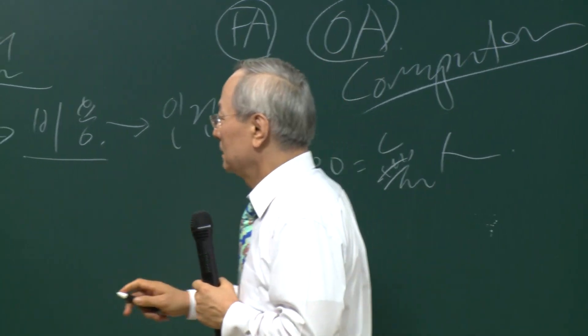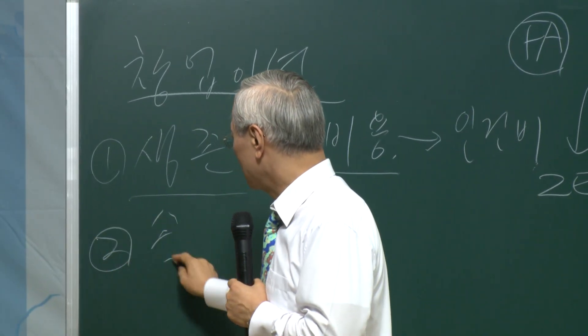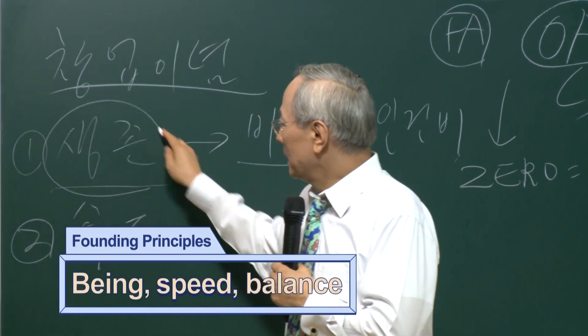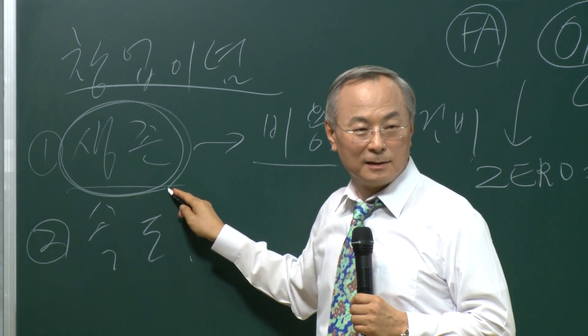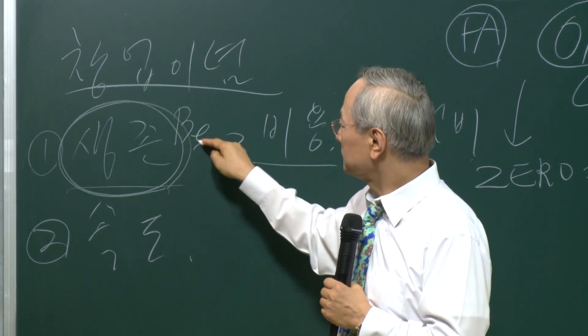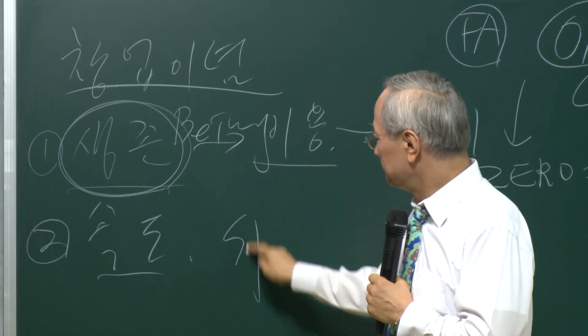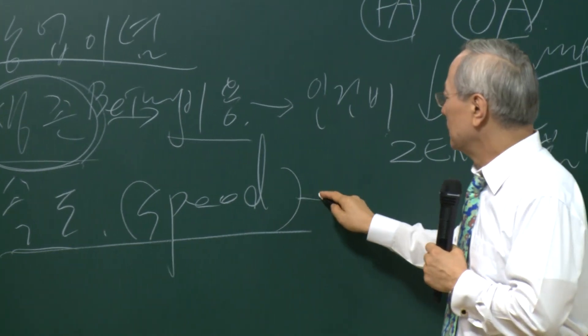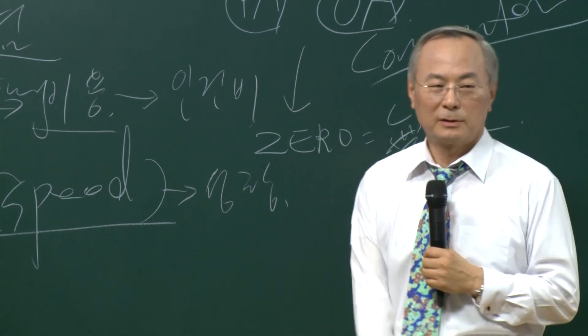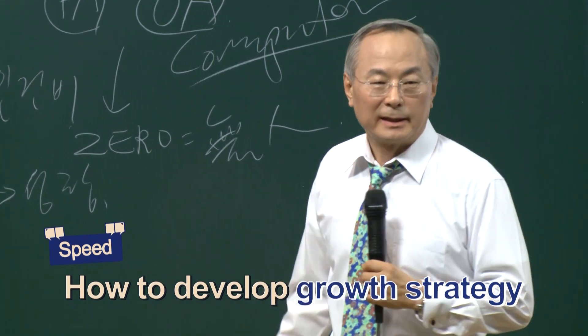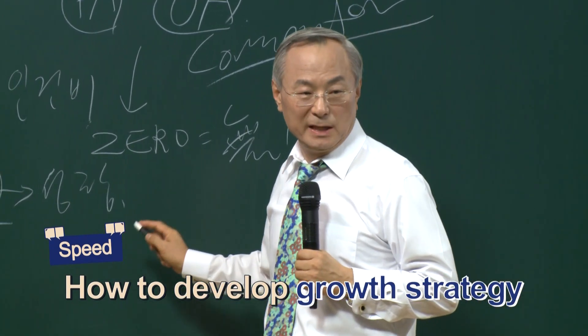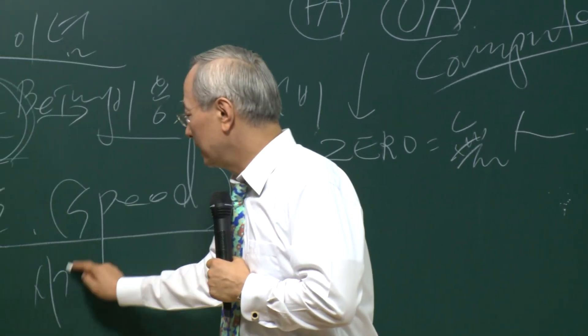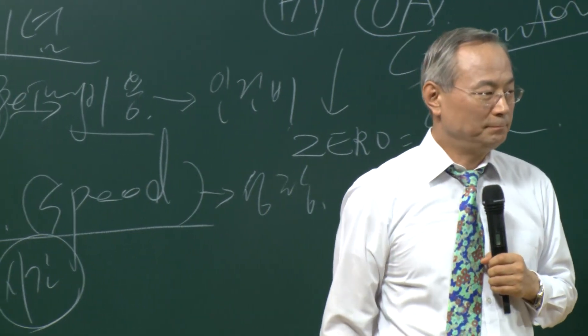Our second principle is speed. The first one is about our survivability, it is the act of being. Now, speed is about the growth of the business. Basically, it focuses on how we will develop the business. The concept of time is always included in speed.